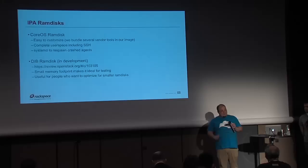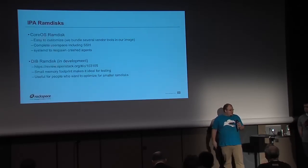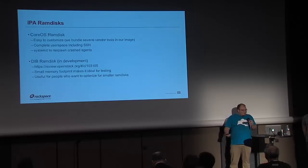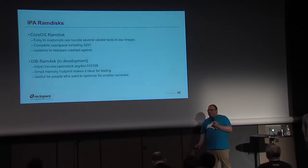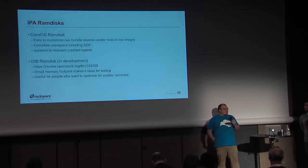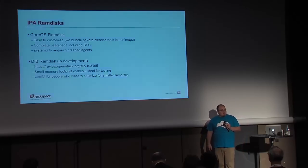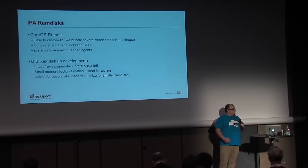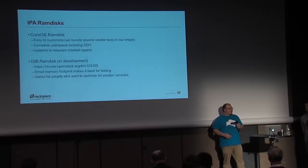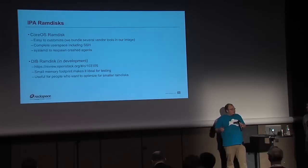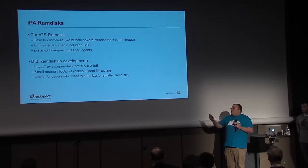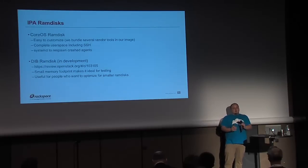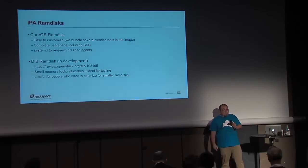There is a Disk Image Builder RAM disk in progress. The main benefit will be for people with memory constraints — today the agent driver CI runs with 1GB VMs whereas the normal Ironic CI runs with 512MB, so we want to slim it down. We also support ISOs: ISO support can take an arbitrary kernel and RAM disk, put those into an ISO suitable for booting on virtual media, and that support exists for the PXE driver today as well.